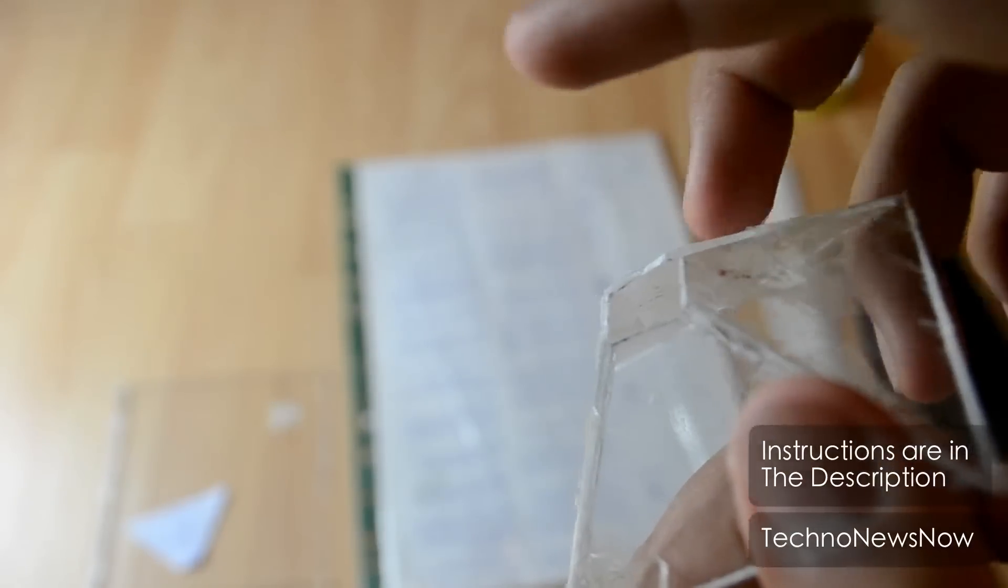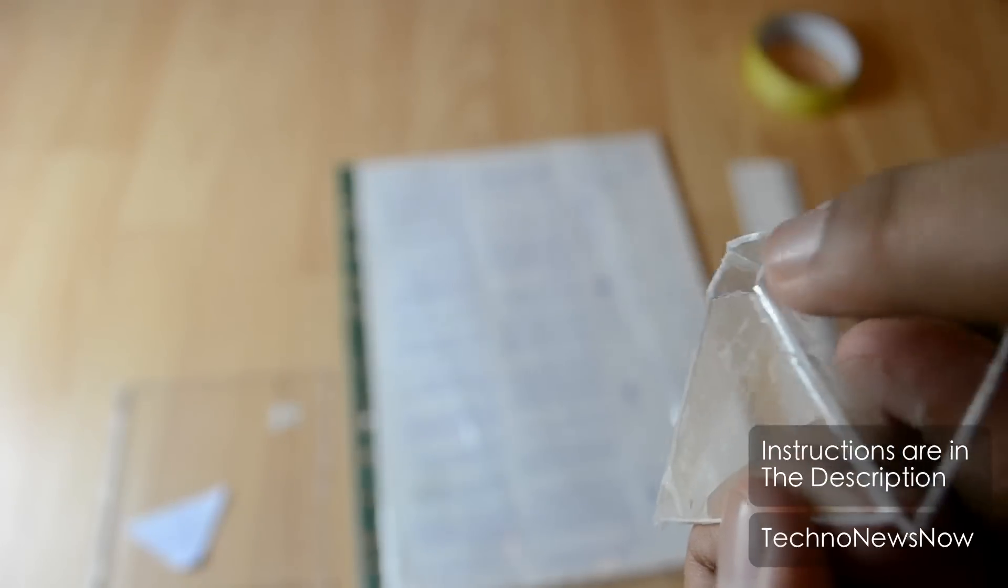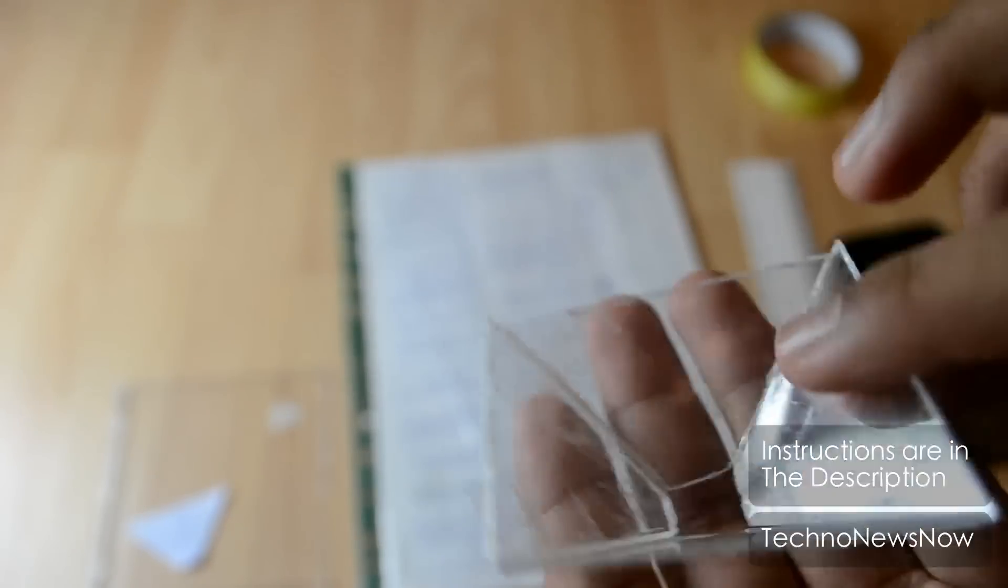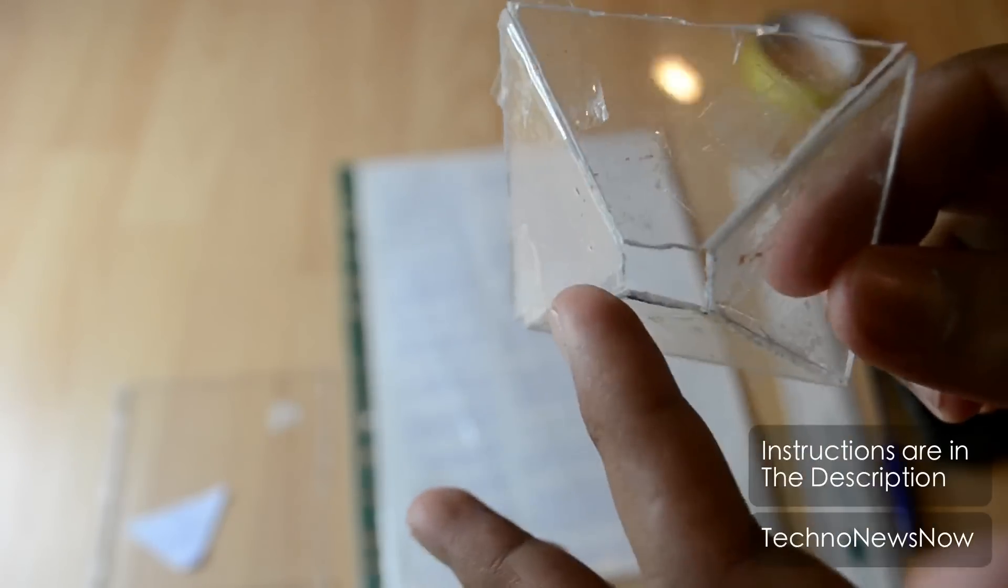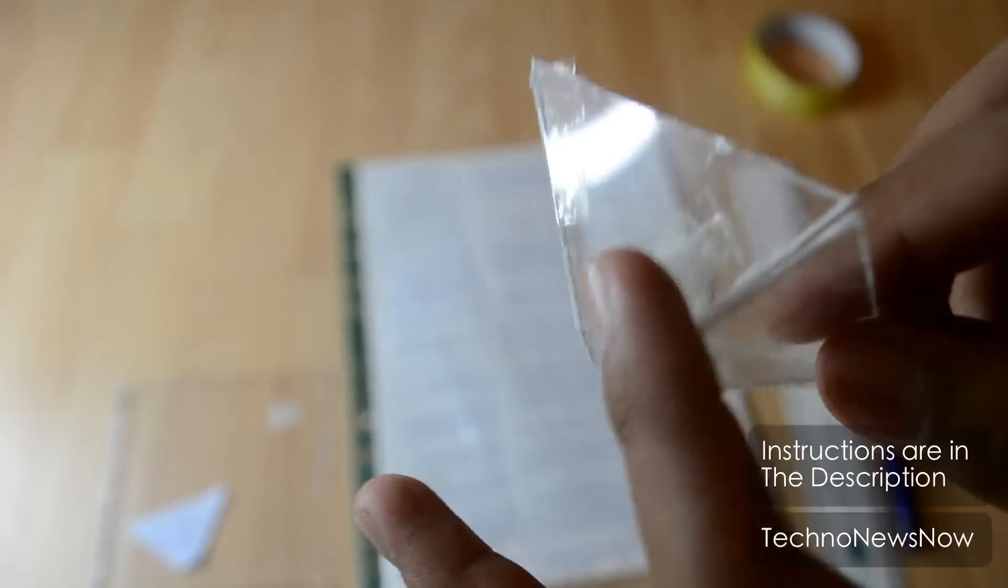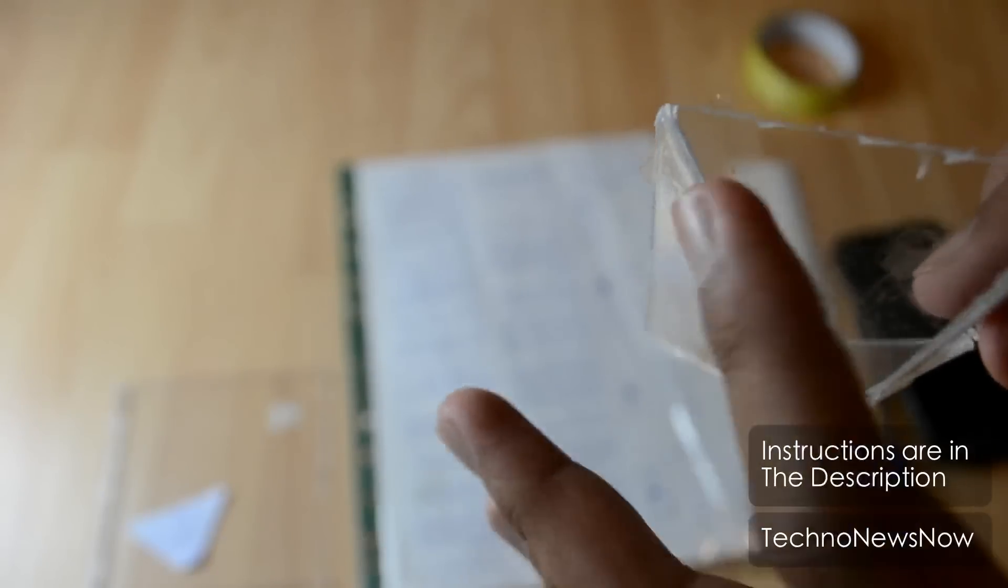As you can see, mine wasn't the straightest there, but it still works. Try and put as much tape as you can to make it sturdy, and try to keep the CD case clean. The cleaner it is, the more visible the hologram will be and the clearer it will look.